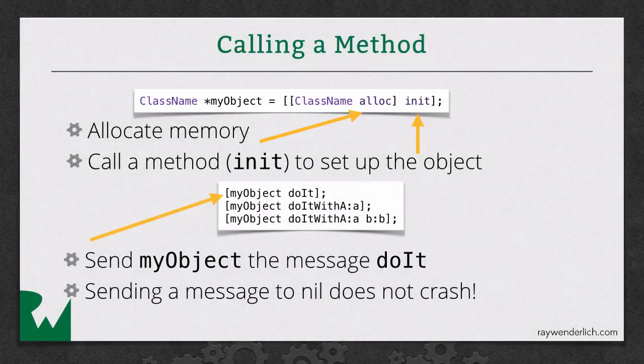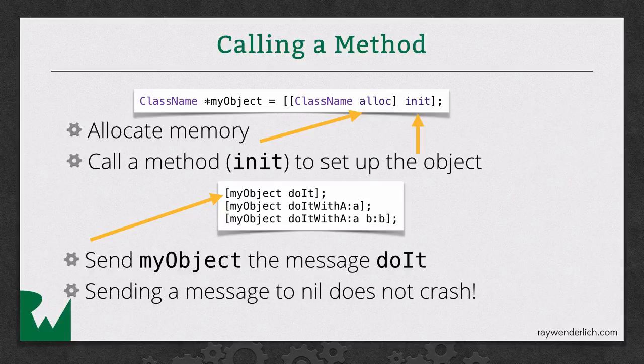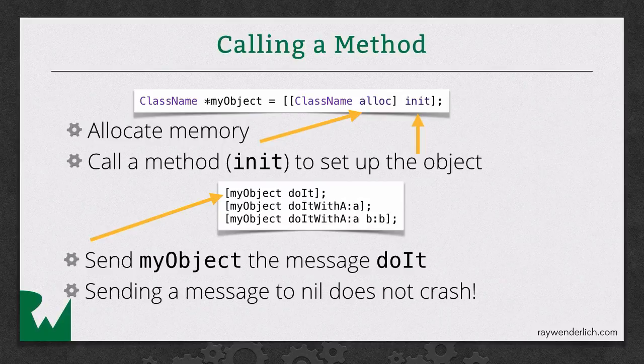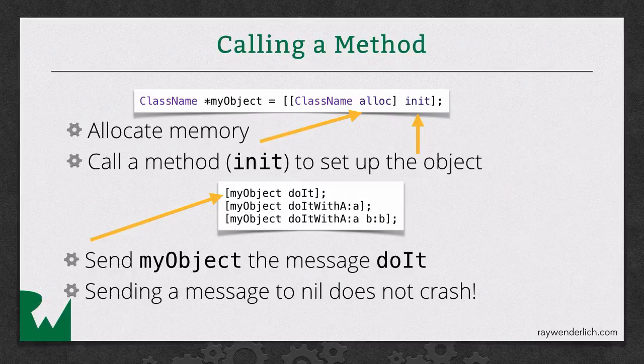And here's an example of calling the methods that I showed you earlier. So, you have an open bracket, you put the object you're trying to call a method on, and then you give the name of the method, and if it takes any parameters, you pass those in with colons. And so, look at the third example. That one takes two parameters, so you put myObject, the first part of the method name, colon, the first parameter, the second part of the method name, colon, the second parameter.